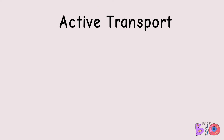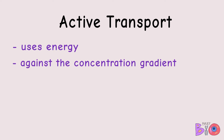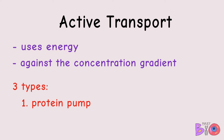Active transport is our other type of cell transport. This type of transport does use energy and travels against the concentration gradient — or up the concentration gradient. Just like passive transport, active transport has three main types: a protein pump, endocytosis, and exocytosis.